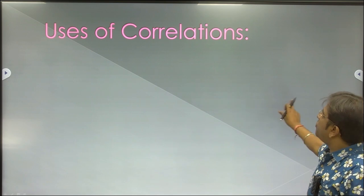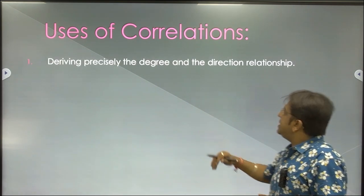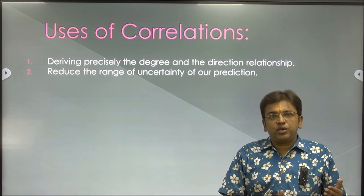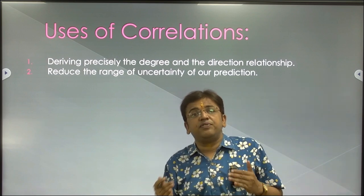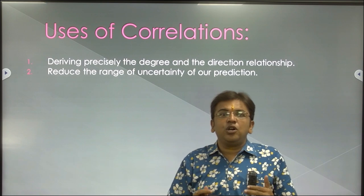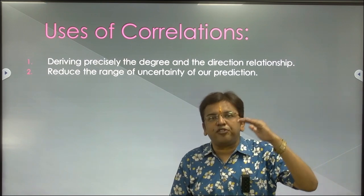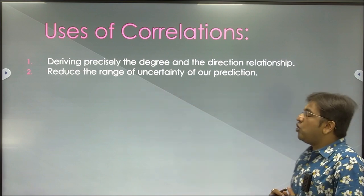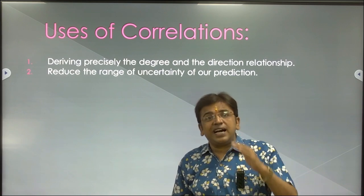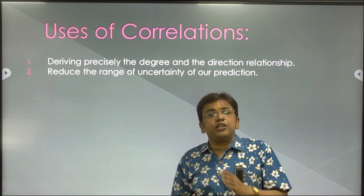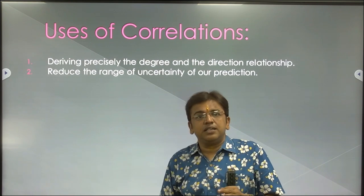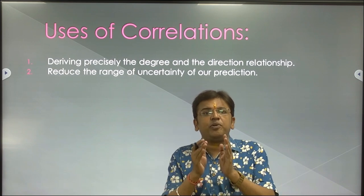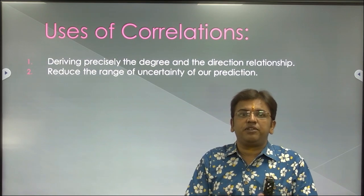What are the uses of correlation? First, it precisely derives the degree and direction of relationship — whether it is positively correlated, negatively correlated, and at what degree. Second, it reduces the range of uncertainty of our prediction. By the help of correlation, the uncertainty of our prediction can easily be removed. It can give a precise result, telling you that the relationship between two variables is positive and what the degree of association between the two variables is.